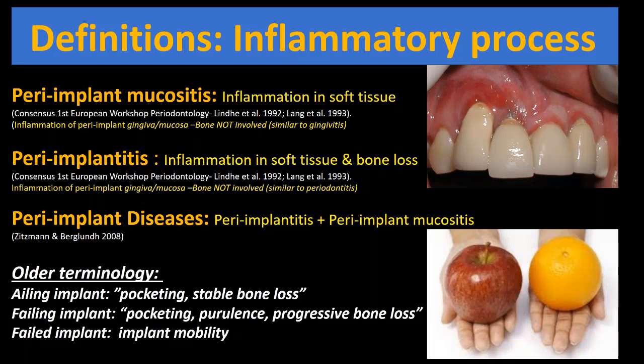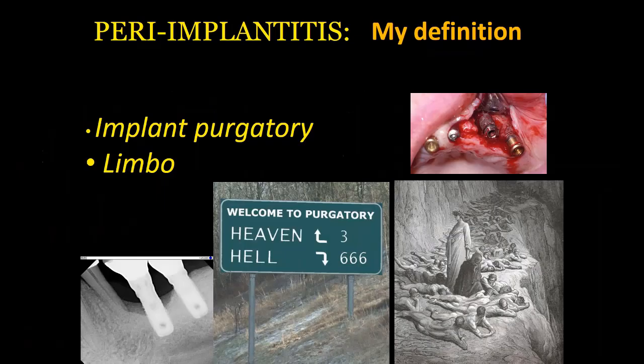Ailing implants were implants with pocketing and some bone loss that were deemed acceptable because they were stable. Failing implants had pocketing, separation, and progressive bone loss. If there was any mobility, that was a failed implant — and I think that part is still valid: if there is any implant mobility, the implant is failed or failing.